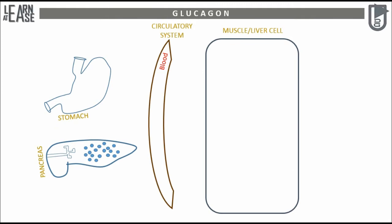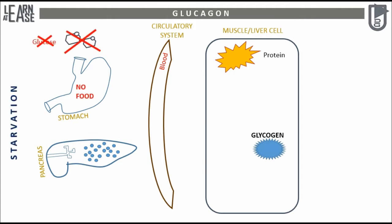In the liver or muscle cell, energy reserve in the form of muscle protein and glycogen is shown. The condition under which glucagon functions is during starvation and fasting. During such situations, the body will start catabolizing protein.